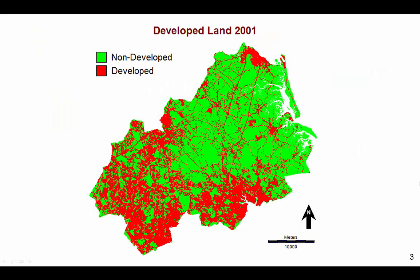GEOMOD requires at the minimum one map of presence versus absence in order to simulate the spatial allocation of change over time. This is a map of presence versus absence of developed land at 2001. Non-developed land is green and developed land is red. We use this map as our initial land cover map to simulate the transition from non-developed to developed land over time.